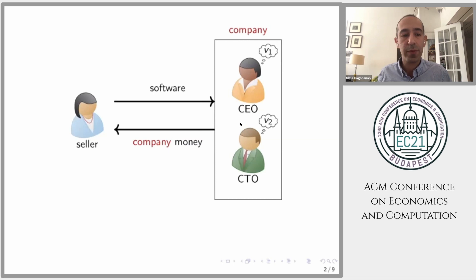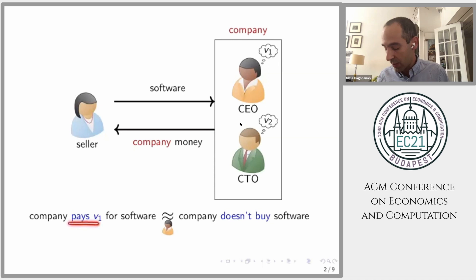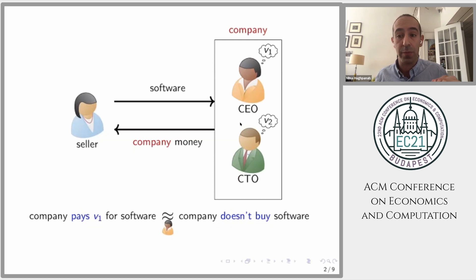Let me explain what a value means when we don't allow individual transfers. The meaning of value V1 is that the CEO thinks the software is worth exactly V1 dollars in terms of company money. In other words, the CEO would be indifferent between the company paying V1 dollars for the software and not buying it. She would prefer to buy if the price is strictly less than V1, and prefer not to buy if the price is strictly more than V1.